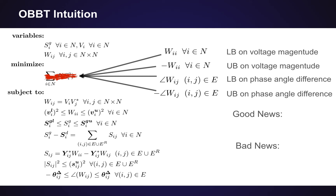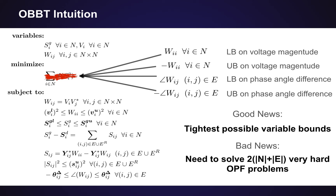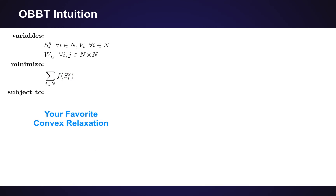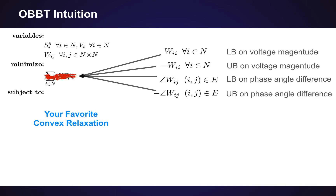There's good news and bad news with this approach. The good news is that if we computed the global optimal solution for every one of these problems, we would have the tightest possible variable bounds for W that you could ever have for your particular instance. The bad news is we need to solve two optimization problems for every node and every edge in the network, and these are non-convex problems — no easier than the original generation cost optimization. So the key idea is: don't solve the non-convex problem. Replace all those constraints with your favorite convex relaxation, which we can compute much faster, then overwrite the objective function with these different variables and solve this large set of optimization problems.